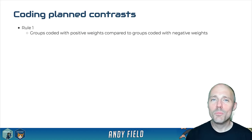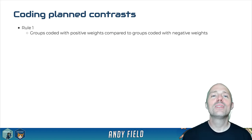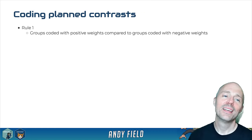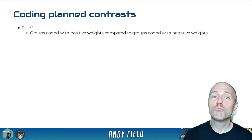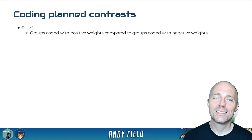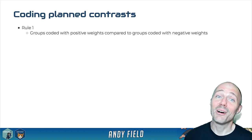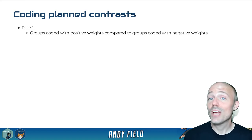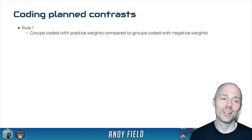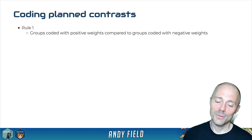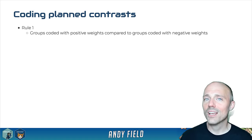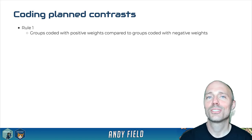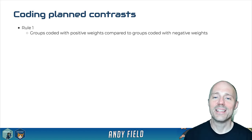Once you've decided which comparisons to make, you need to come up with numeric codes — weights — to represent those contrasts. Here are some rules to guide you. Rule one: assign positive numbers to one chunk and negative numbers to the other chunk — this ensures those two chunks get compared. Rule two: your weights must sum to zero, otherwise the mathematics goes wrong. Rule three: if a group is not involved in a comparison, assign it a weight of zero.